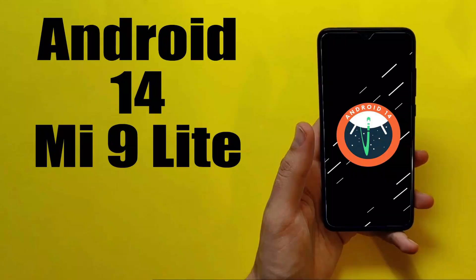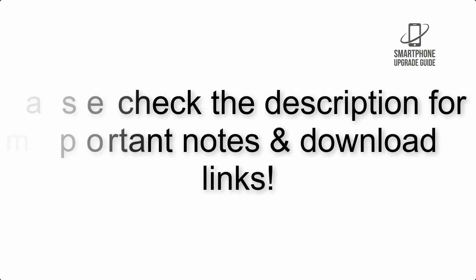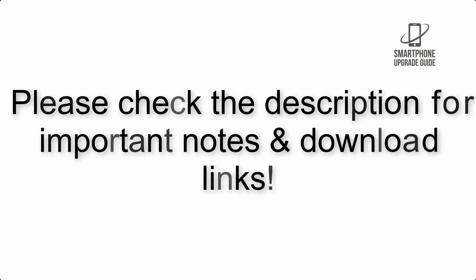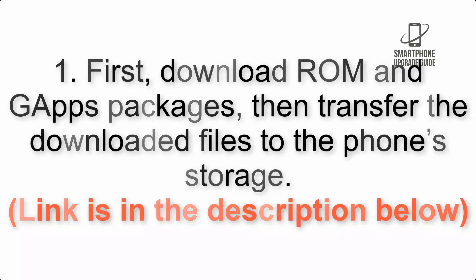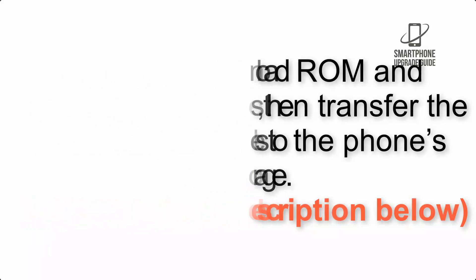Install Android 14 on Mi 9 Lite via Lineage OS 21. Please check the description for important notes and all the download links. First, download the ROM and GApps packages, then transfer the downloaded files to the phone storage. The link is in the description below.